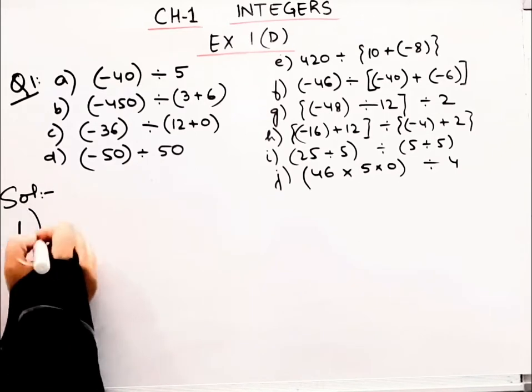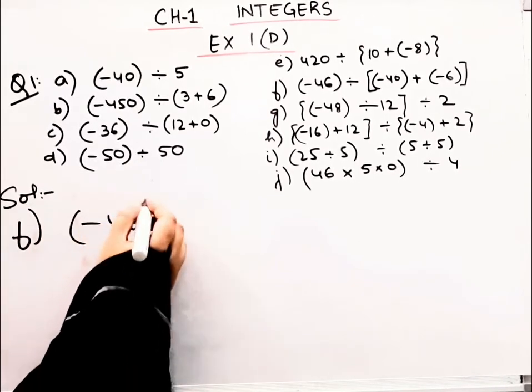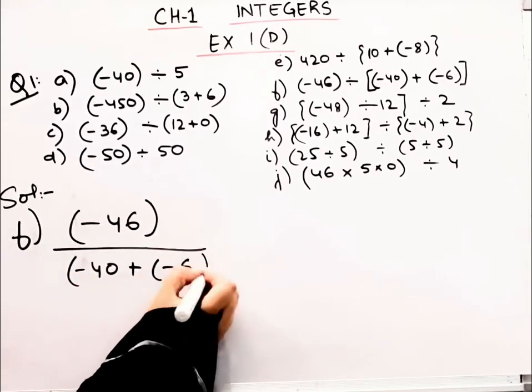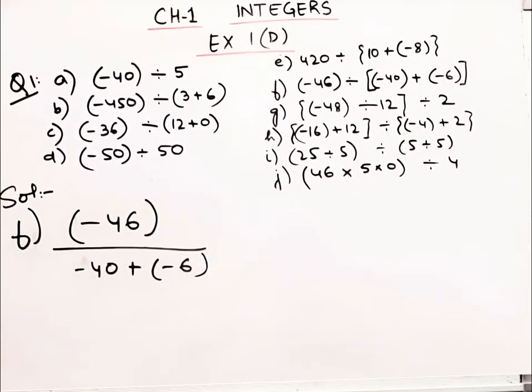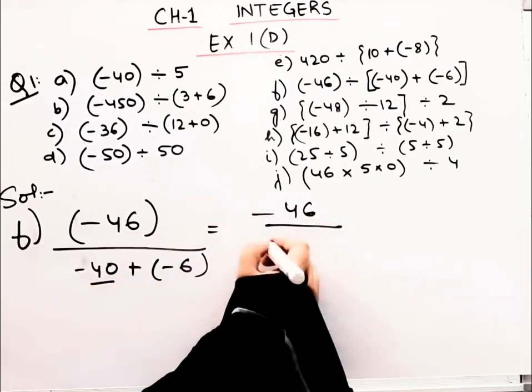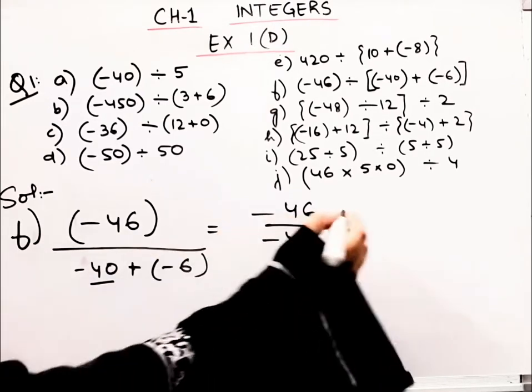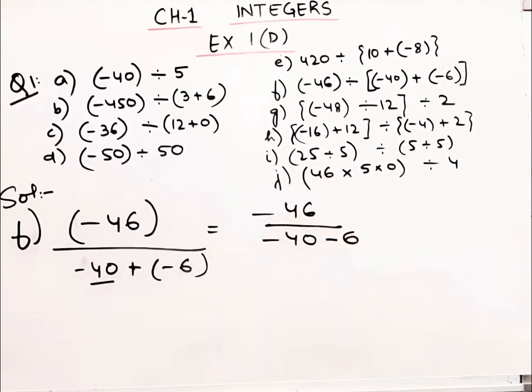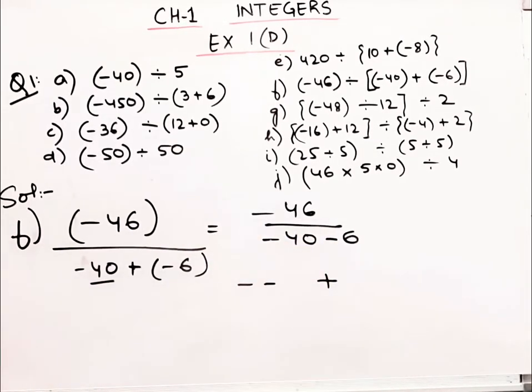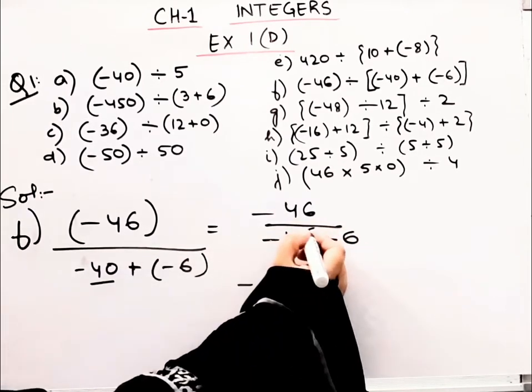How do we get 420 divided by 2? 2 twos are 4, 2 ones are 2, and 0. So answer will be 210. Let's do the part (f). Here we have minus 46 divided by minus 40 plus minus 6. Minus 46 divided by, this is minus 40 plus minus. What happens? Plus minus, minus becomes minus. When plus and minus multiply, this is the multiplication of signs in bracket. So plus minus becomes minus.